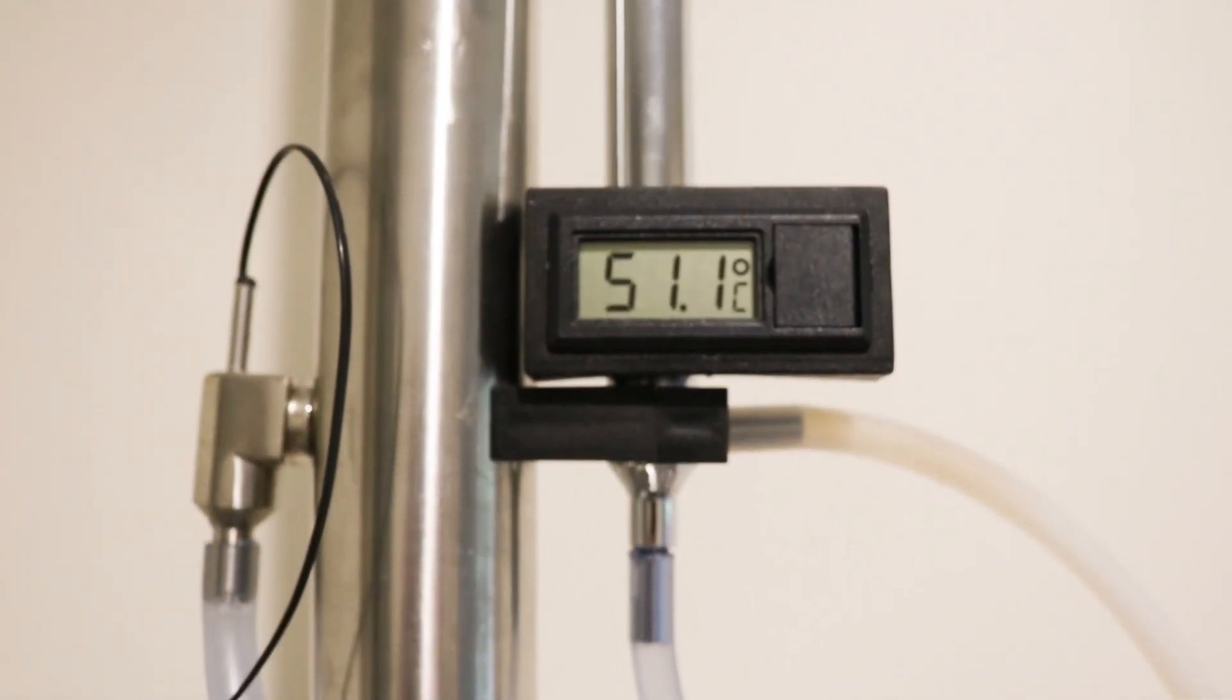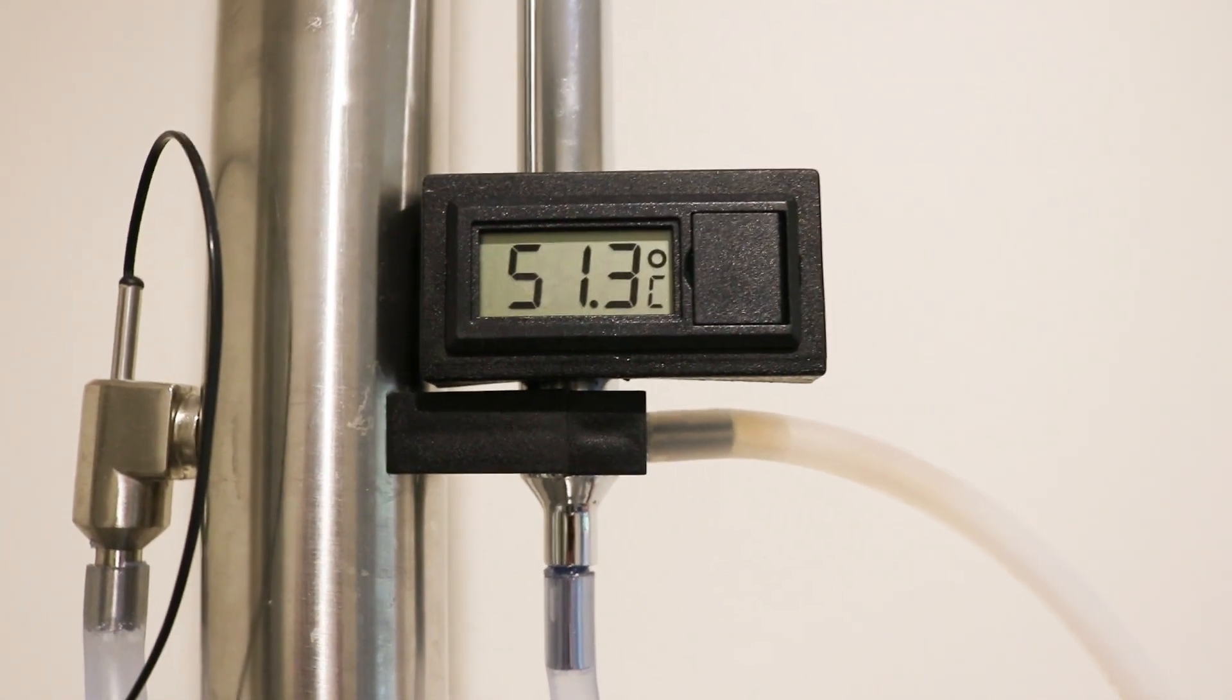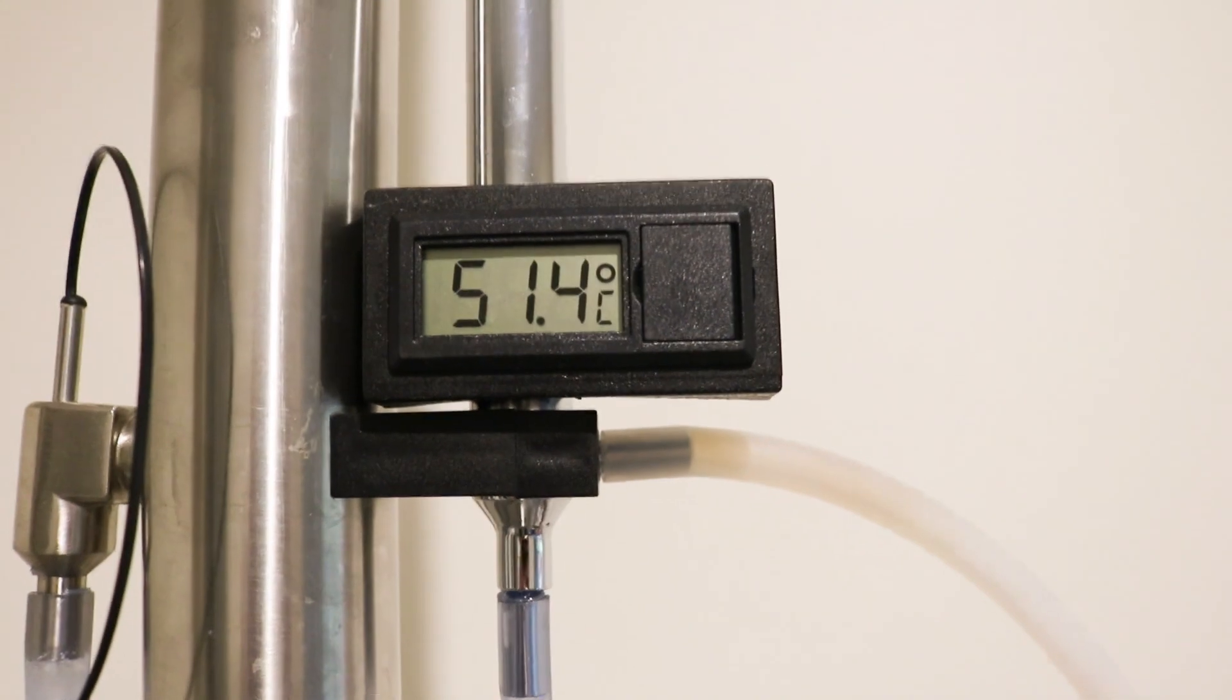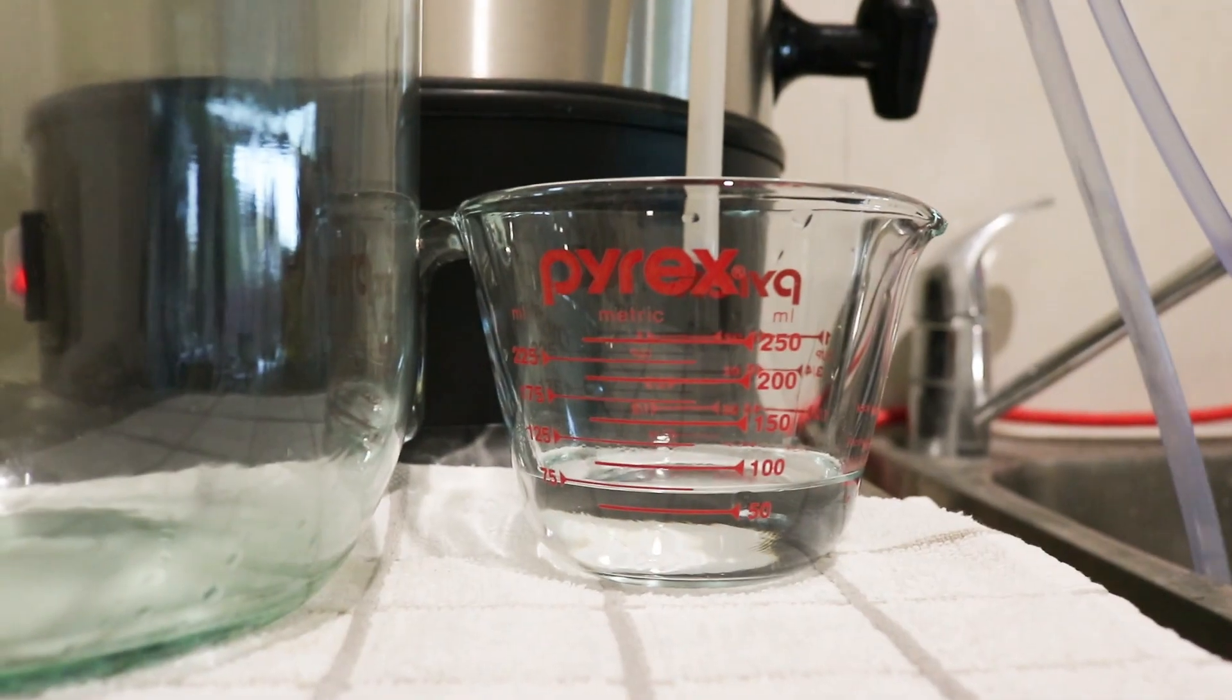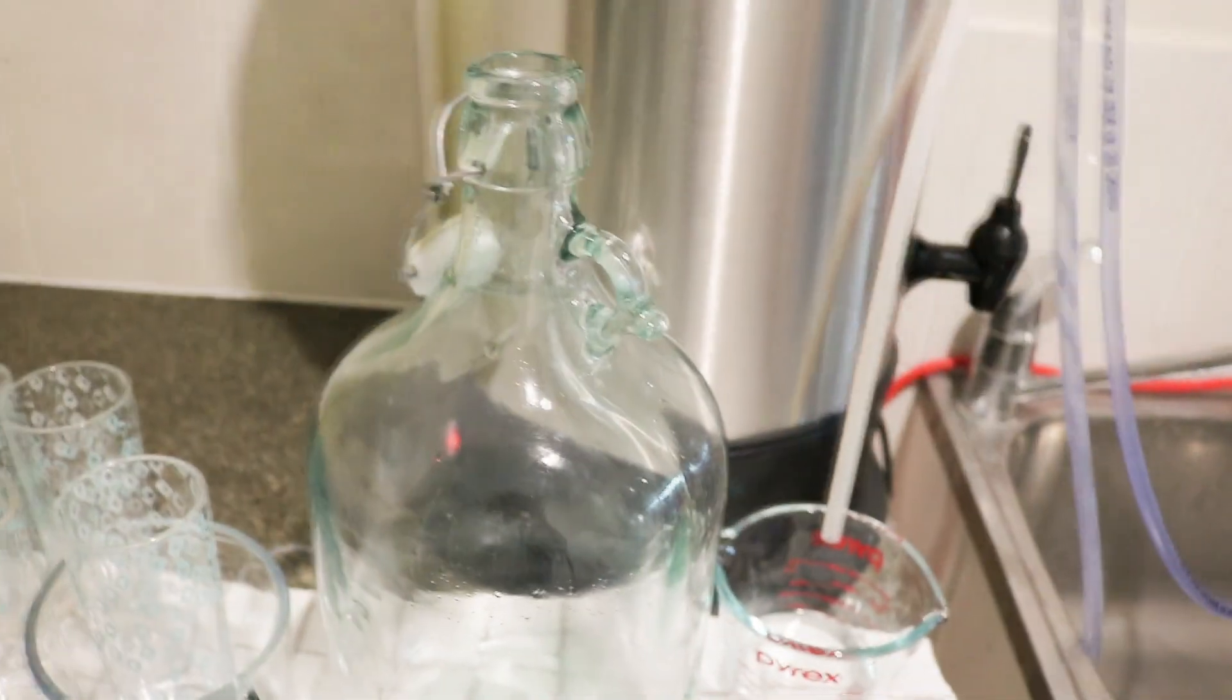Now, this is the acetone, methanol and ethyl acetate. Those are the three things that you don't want. Those are the head. Those are all the parts that are poisonous. You don't want it in your mix. So you take that out. I've separated 75 mils out of here. And that should be more than sufficient.